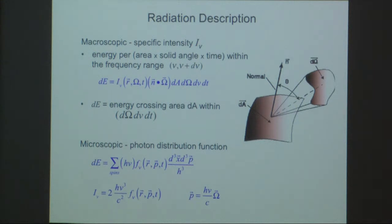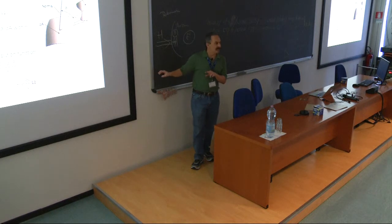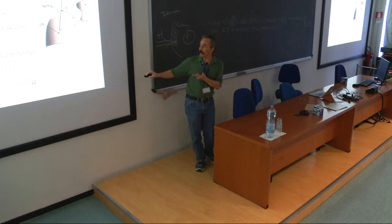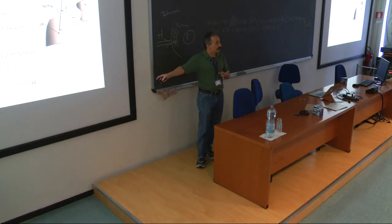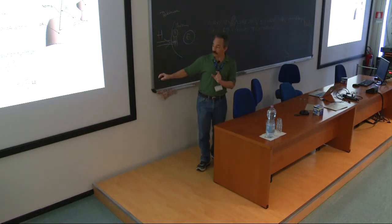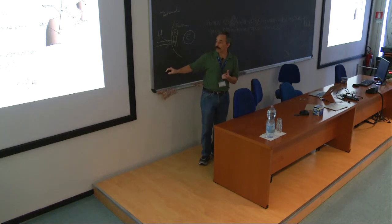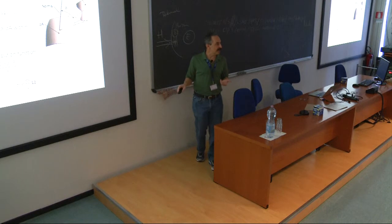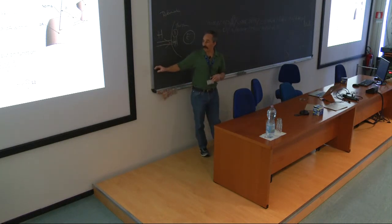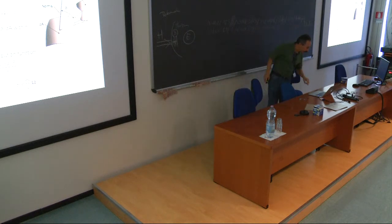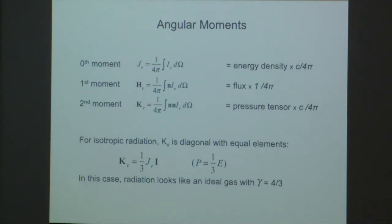In terms of a microscopic description, the same information is in the photon distribution function. Photons have positions in space, in momentum, and it's time dependent as well. The intensity is related to the photon distribution function — it's the sum over spins of the photon distribution function. Instead of a number of particles, we're talking about energy, so each photon gets multiplied by its energy h nu. Since we're talking about index of refraction one, the momentum is just h nu over c times the direction.